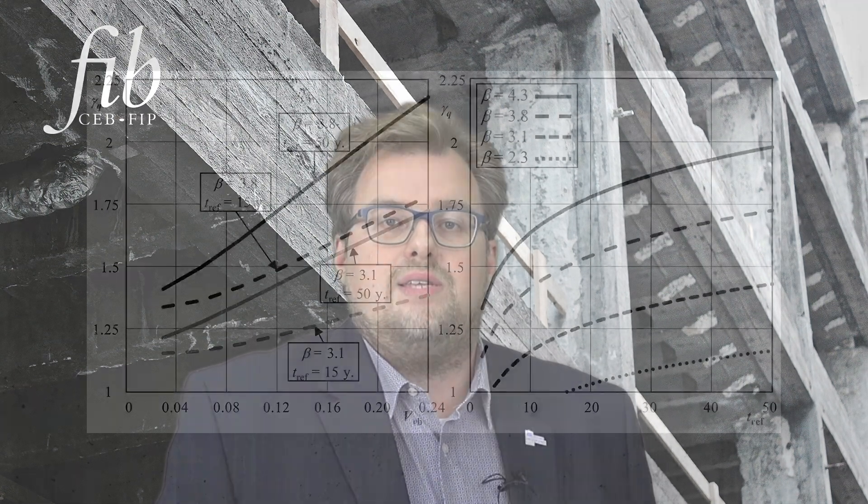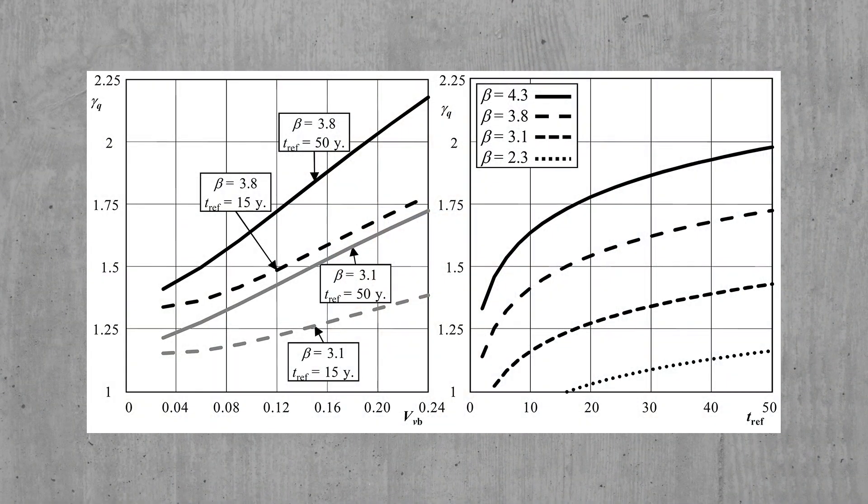This enables taking into account additional information which might be available for the existing concrete structure. In the bulletin, first the framework for the choice of suitable target reliability levels is elaborated. Further, partial factor methods for the verification of existing concrete structures are proposed and validated. A very nice feature of the bulletin is that it also provides a large set of easy-to-use graphs that enable a quick use of the proposed methodology for practitioners.